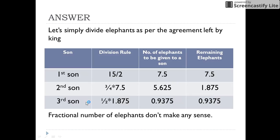The third son had to get half of these remaining elephants. So he gets 0.9375 elephants, and the remaining elephants are also 0.9375. Now, do you think the elephant's number in fraction makes any sense? And even after that, we are still left with 0.9375.